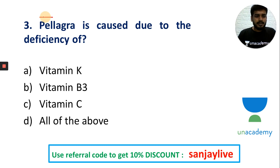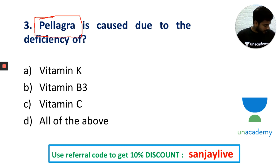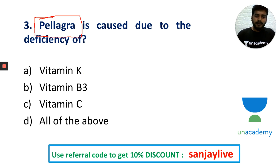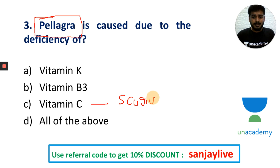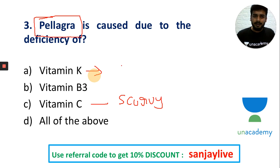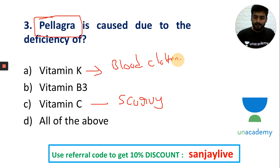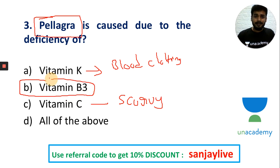Pellagra is caused due to deficiency of vitamin B3 (niacin). Vitamin C deficiency causes scurvy. Vitamin K deficiency causes hemophilia — a blood clotting problem. Vitamin B3 (niacin) deficiency causes pellagra.